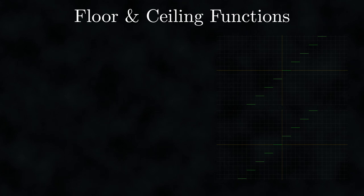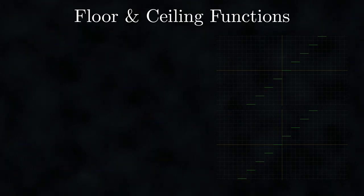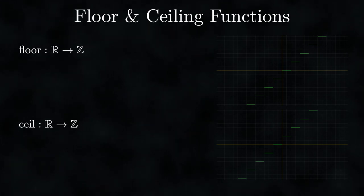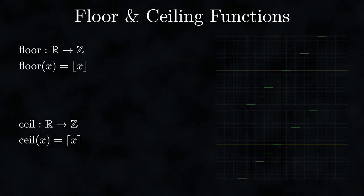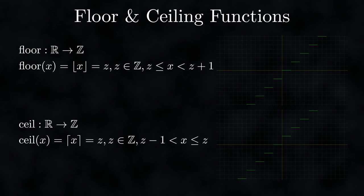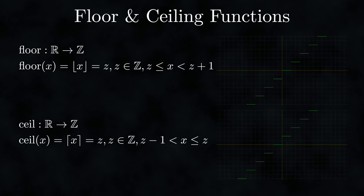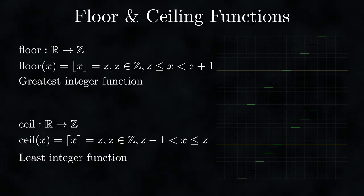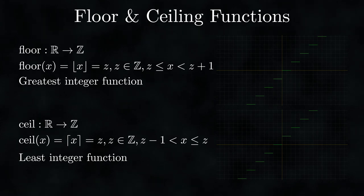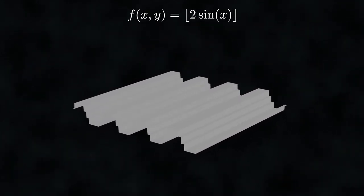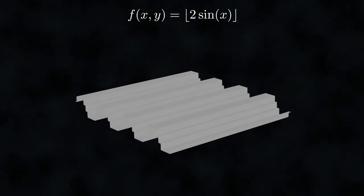The floor and ceiling functions are widely used in computer science and have a special place in computer graphics. Both take a single real number and output an integer, converting real numbers to integers. The floor of x is the greatest integer less than or equal to x, while the ceiling of x is the least integer greater than or equal to x — sometimes called the greatest and least integer functions. The height field graph of such a function illustrates their practical application and brings us closer to what we aim to achieve in our grand finale.